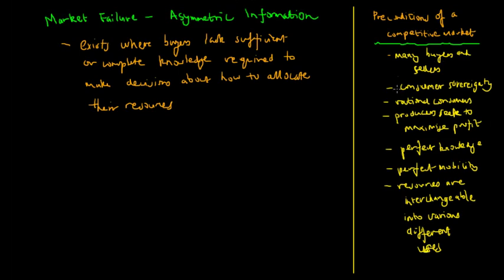Asymmetric information counters this precondition of a competitive market. Resources are not allocated in their most efficient way because buyers lack the sufficient knowledge required to make decisions about how to allocate their resources so that their living standards are maximized. I was reading up on a case in law that really typified what asymmetric information was all about.